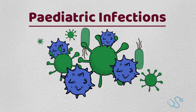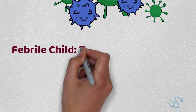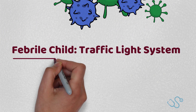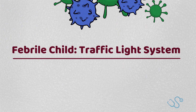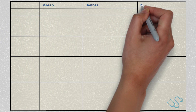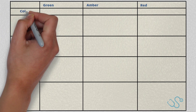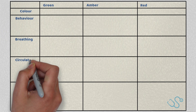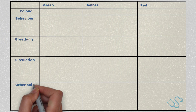Before we begin, we should cover the NICE traffic light criteria for a febrile child. It's a good starting point to use when taking a history and assessing an unwell child, particularly in those younger than 5 years old. The NICE traffic light system is based on whether a child is green, amber or red, and splits up into colour, behaviour, circulation and extra points.